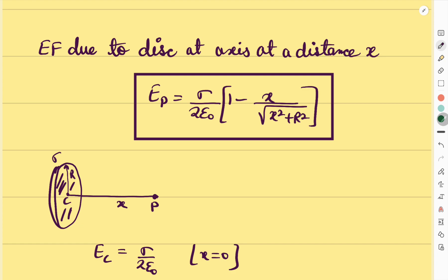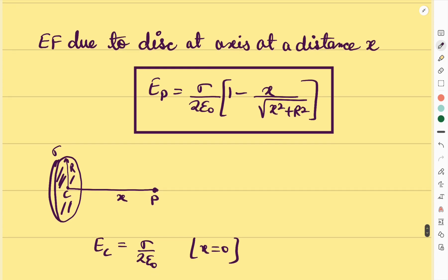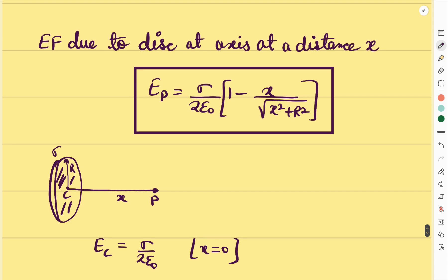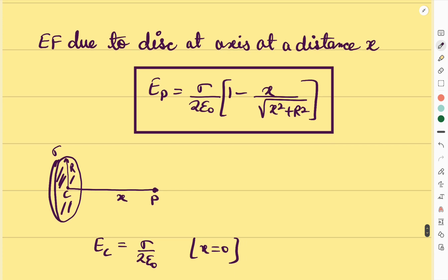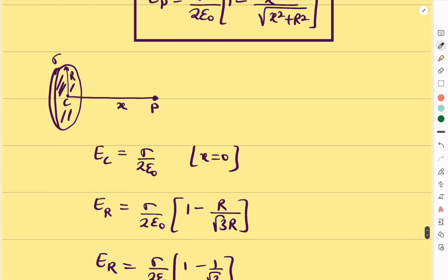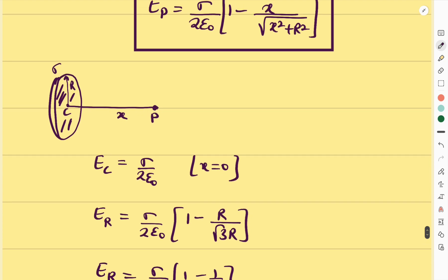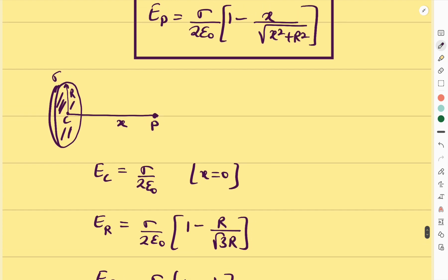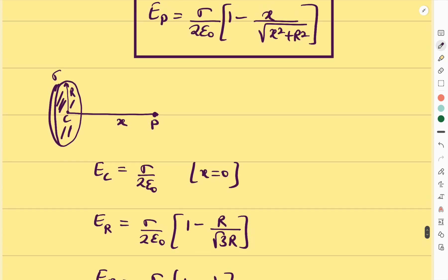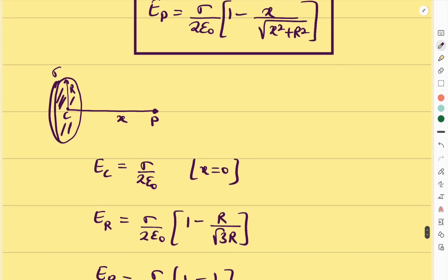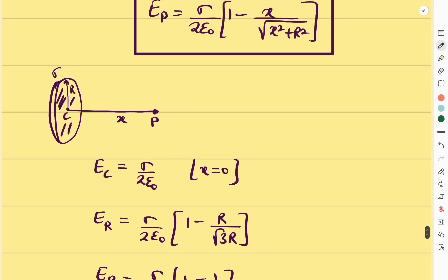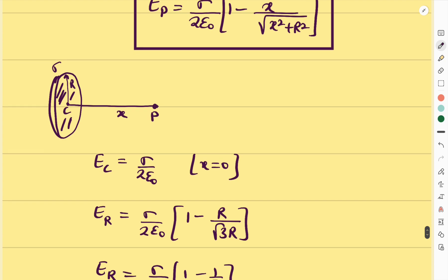The first type of question asks for the electric field at the center. At the center, x = 0, so the formula gives E = σ/(2ε₀), which is the same as the result for a non-conducting infinite sheet. The field is maximum at the center, and as we increase the distance x, the electric field is reduced.